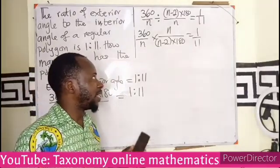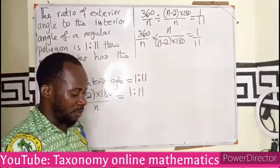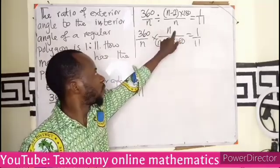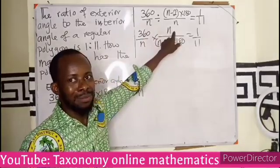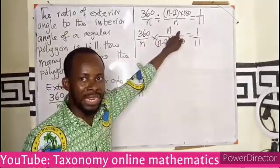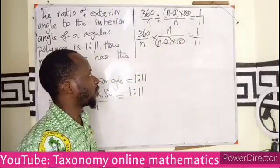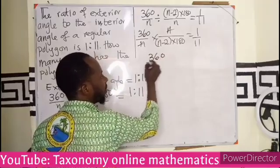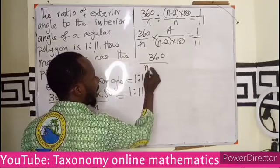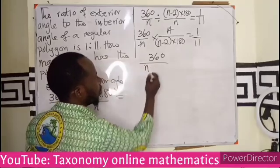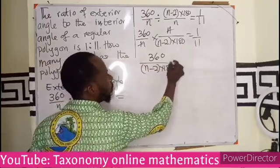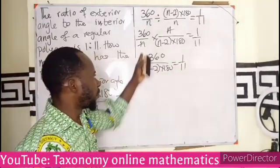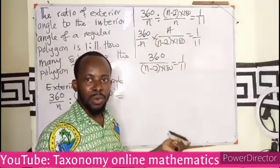Step by step — at this point you can pause the video and try the cancellation yourself. The n in the numerator and denominator cancels, leaving 360 over (n−2)×180 equals 1 over 11. Now we have two simple fractions, so we cross-multiply.